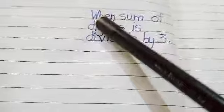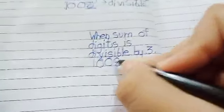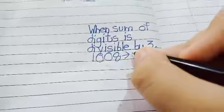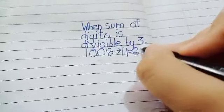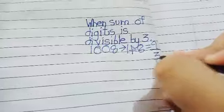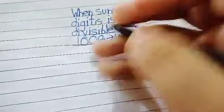Now let's go to the second question. We will check divisibility by 3. The rule is: a number is divisible by 3 if the sum of its digits is divisible by 3. For 1008: 1 + 0 + 0 + 8 = 9. Since 9 is divisible by 3, yes, 1008 is divisible by 3.